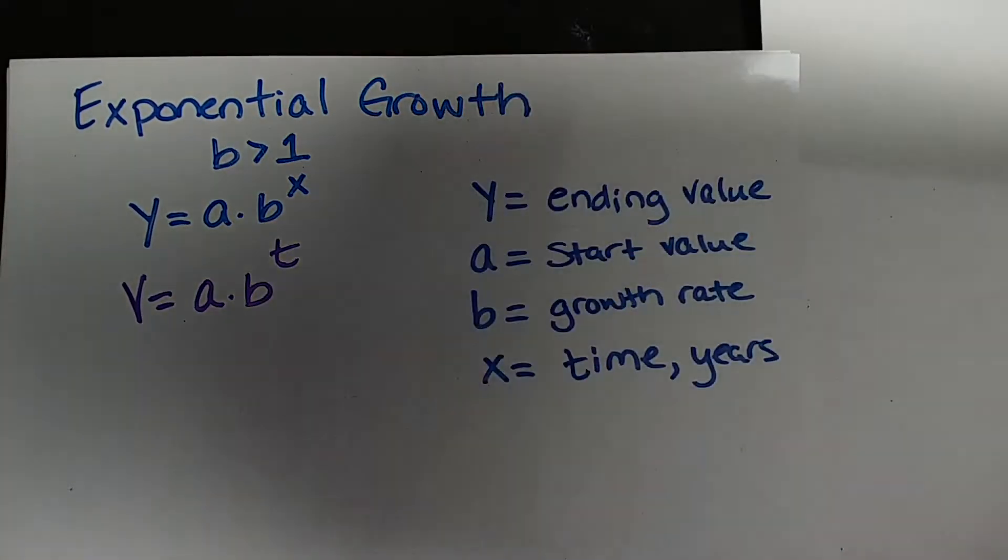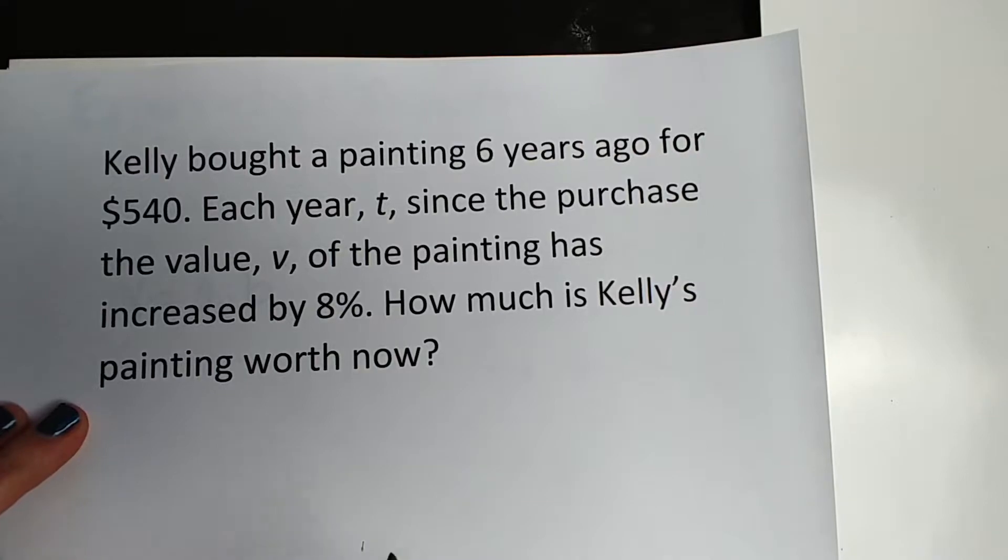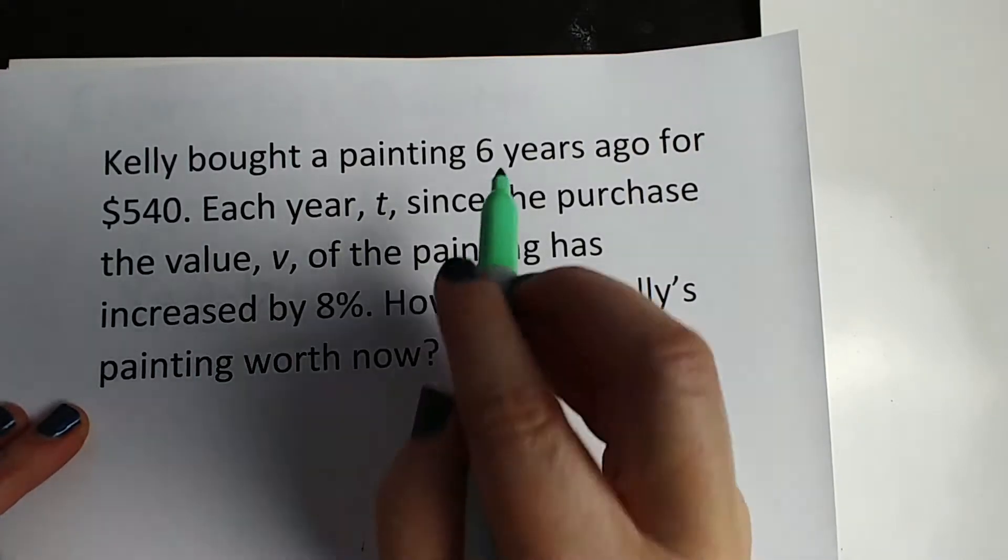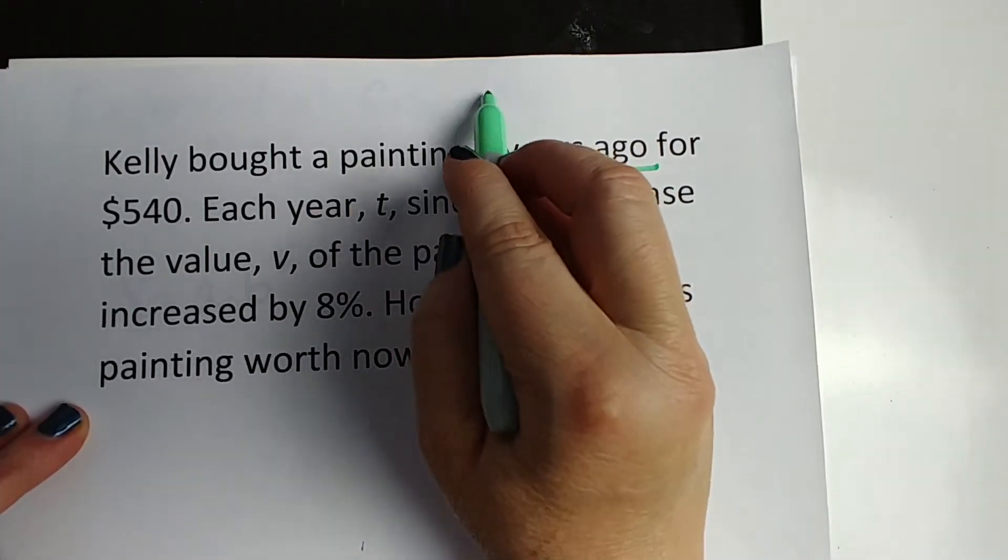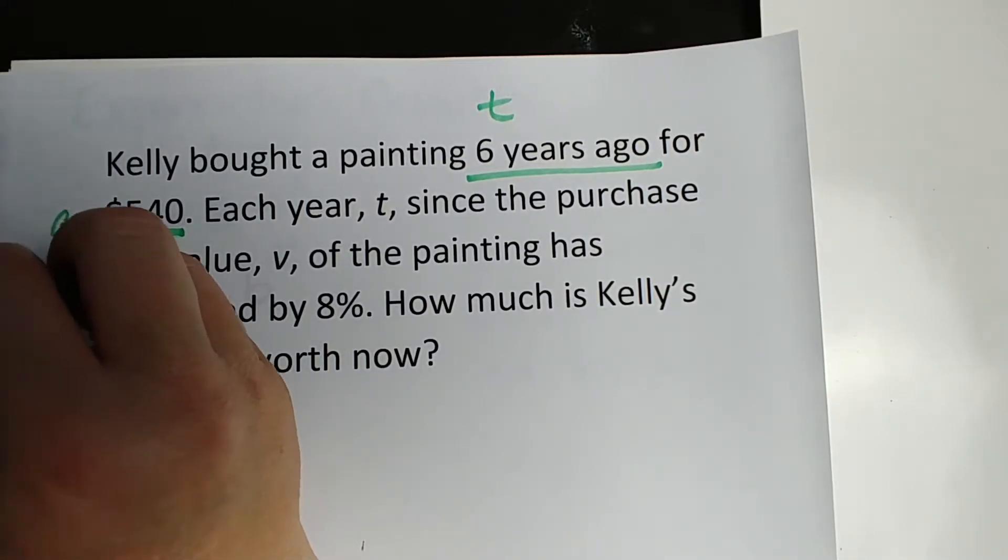Let's identify everything that we have here. When you read these problems, it's very important to identify all the values they give you. If she bought the painting six years ago and she wants to know the value now, that makes six the time T. If she bought it for $540, that's not what it's worth now. That's the starting value, so that's going to be A.